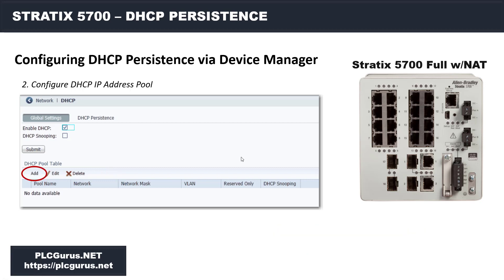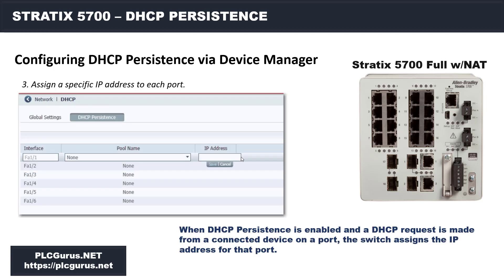Next, we want to configure the DHCP IP address pool. If you have BOOTP clients plugging into this switch, you want to assign them an IP address from the pool you've defined. And lastly, to assign DHCP persistence, we set up each port and the IP address we want to define for that port. When DHCP persistence is enabled and a DHCP request is made from a connected device on a port, the switch assigns the IP address for that port. It's really just a few screens and a couple of settings, but the advantages are very apparent.